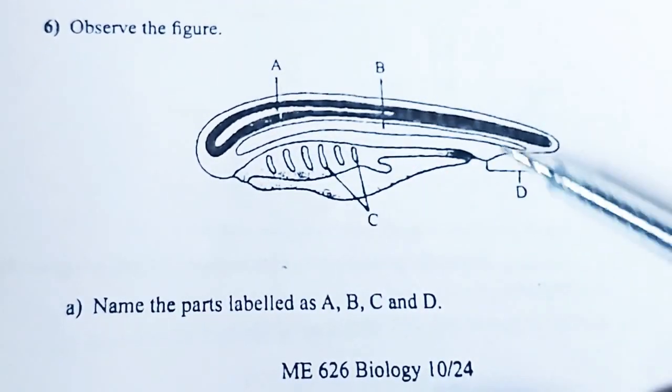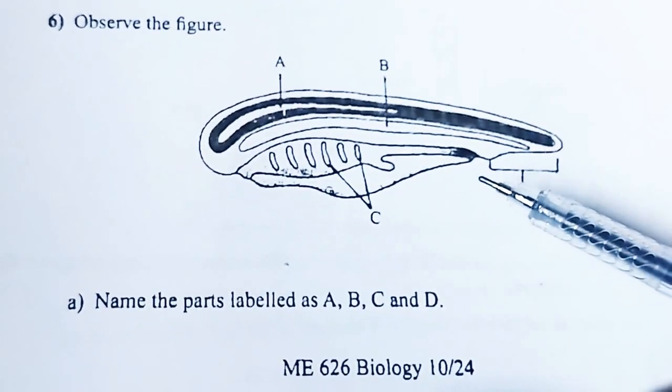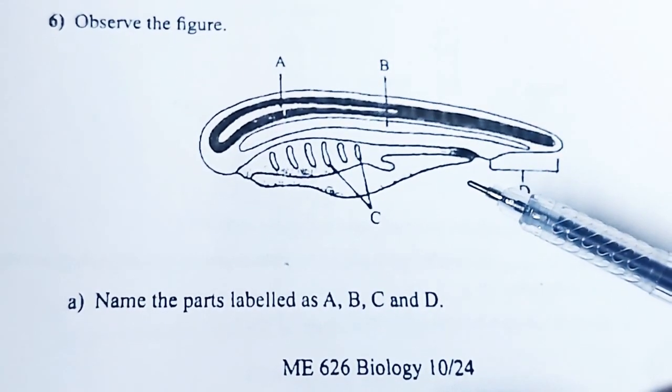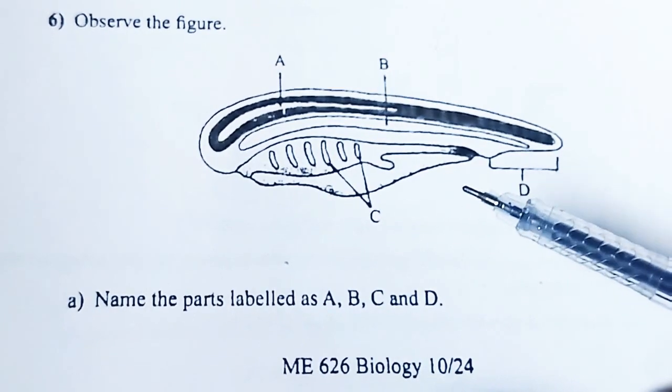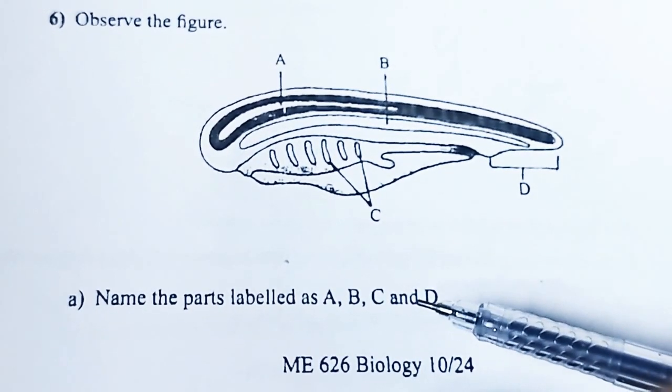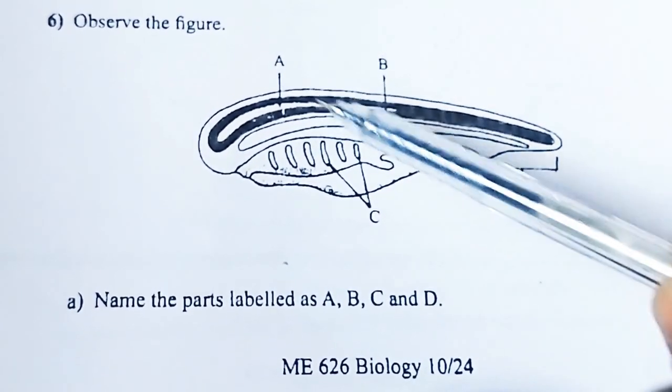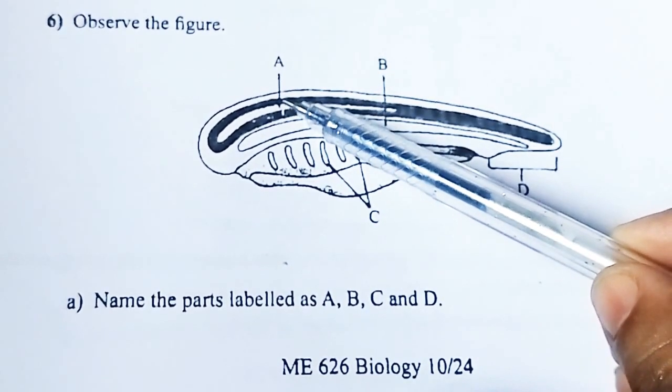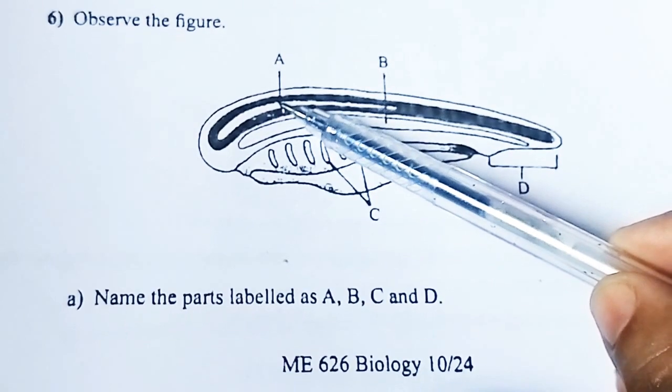Observe the figure. Name the parts labeled as A, B, C, and D. Part A and Part D are to be identified.